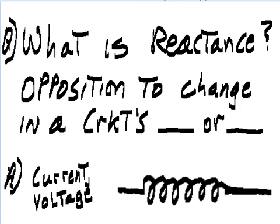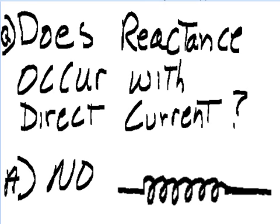What is reactance? It's opposition to change in a circuit's what? In a circuit's current or voltage. Does reactance occur with direct current, DC? Answer: no.